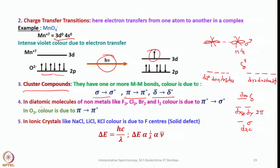In diatomic molecules of non-metals such as F₂, Cl₂, Br₂, and I₂, color is due to pi→sigma* transition. In O₂, color is due to pi→pi* transition. In ionic crystals — NaCl, LiCl, KCl — color is due to F-centers (solid-state defects). Rock salt is sometimes slightly pink in color because voids are occupied by different hetero-anions or cations. This is called a solid-state defect, and color in ionic crystals is due to such solid-state differences.